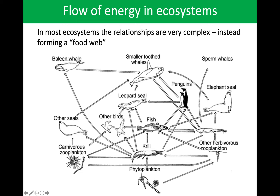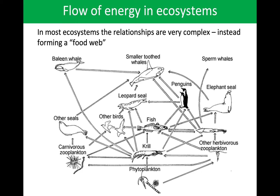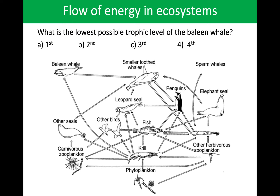We can also go more directly — from the whale to herbivores to zooplankton straight to phytoplankton, covering only about four layers instead of six. It's very complex and never quite linear. Let's think about one species in this diagram: if we focus on the baleen whale, what's the lowest possible trophic level it can be? It only has one food source — it eats krill, and the krill eat phytoplankton. So phytoplankton is trophic level one, krill is level two, and the baleen whale is trophic level three.